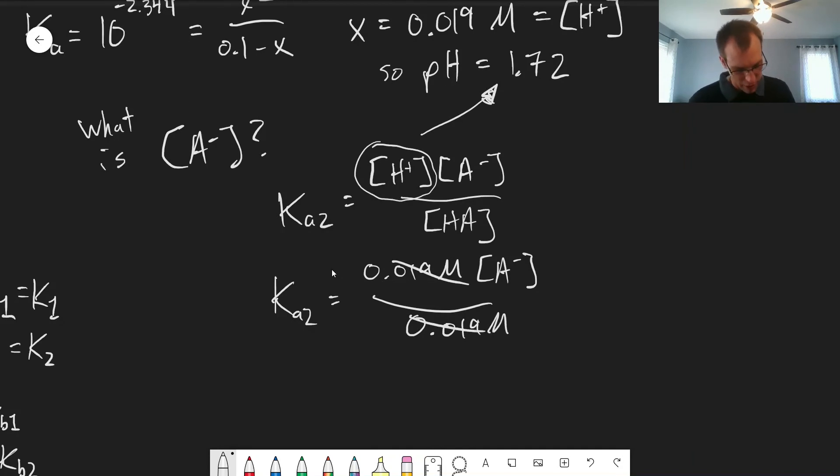Those are going to cancel out and concentration of A minus will be equal to KA2, which was 10 to the negative 9.868. We can calculate that and that is equal to 1.36 times 10 to the minus 10 molar.